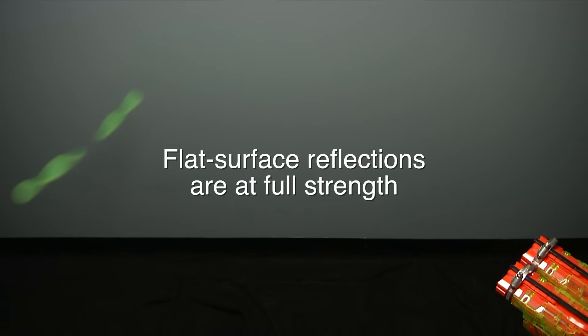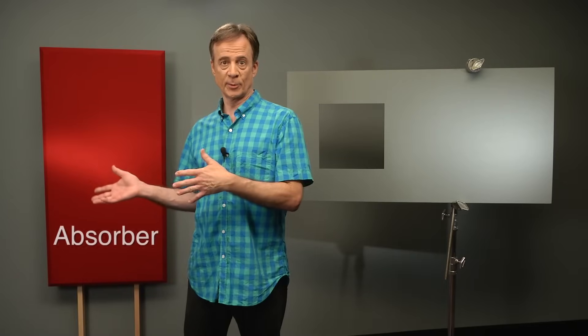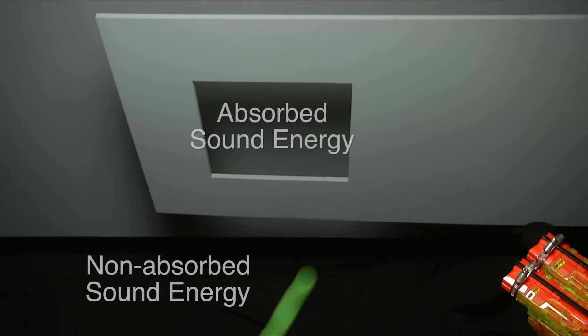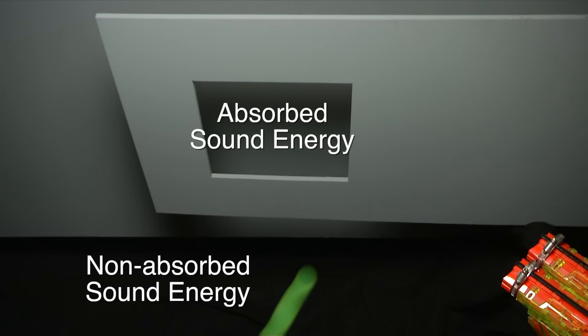How can we make our rooms sound better? Let's use the first of our two acoustical tools: an absorber, to reduce the strength of sound bounces. To a sound wave, an absorber looks a little like a hole in the wall, so some of the energy doesn't come back. An absorber works by reducing the strength of reflected sound that would otherwise cause more destructive interference.